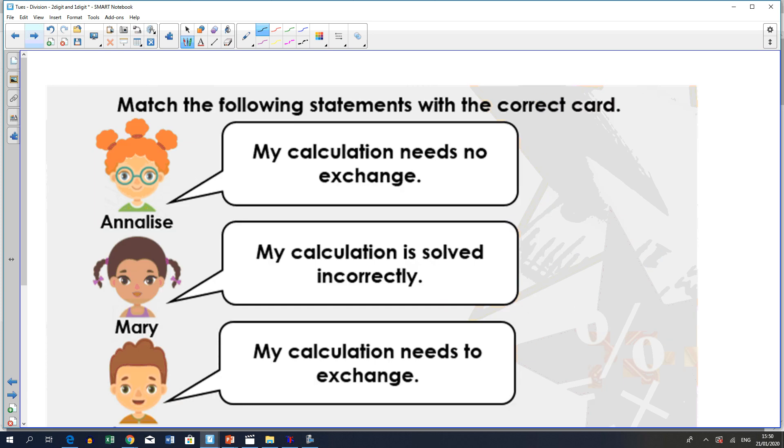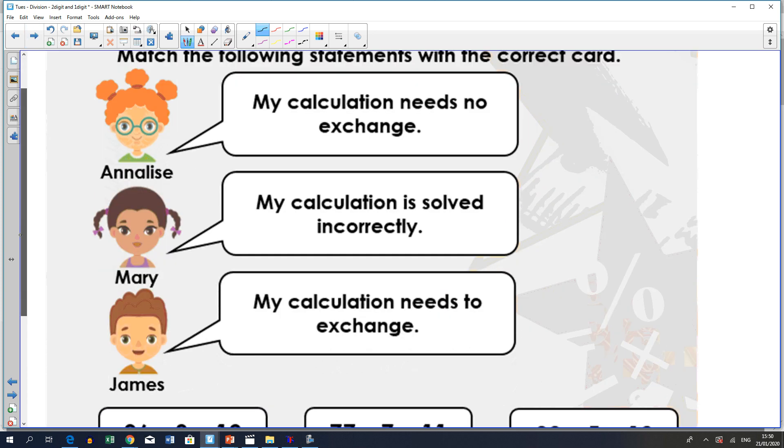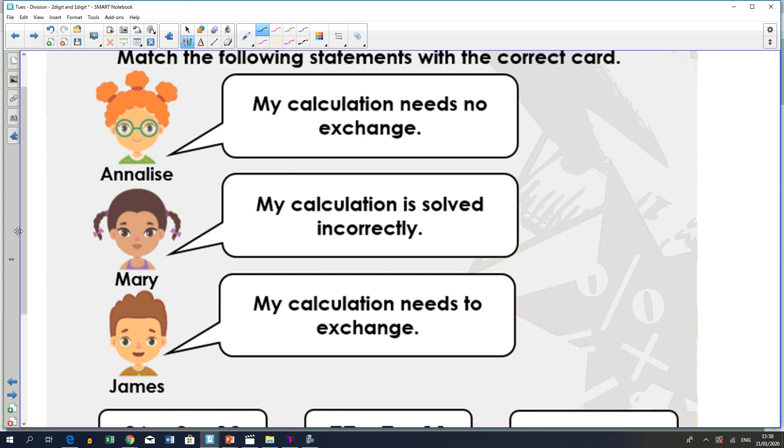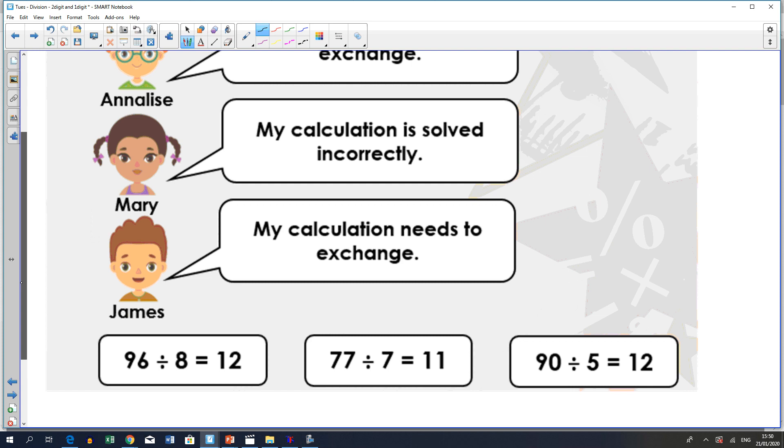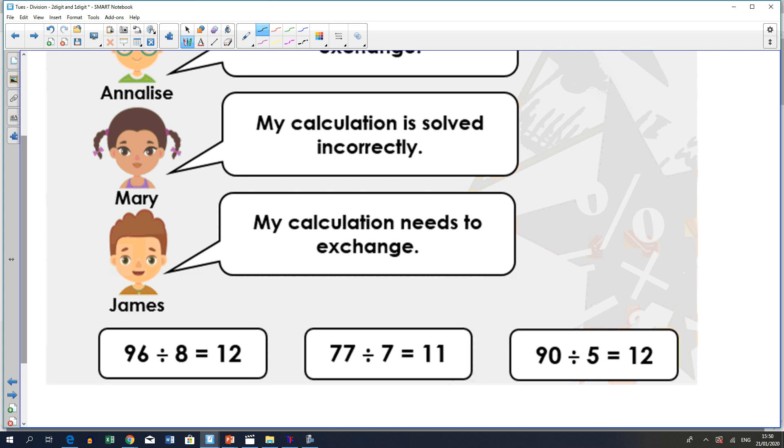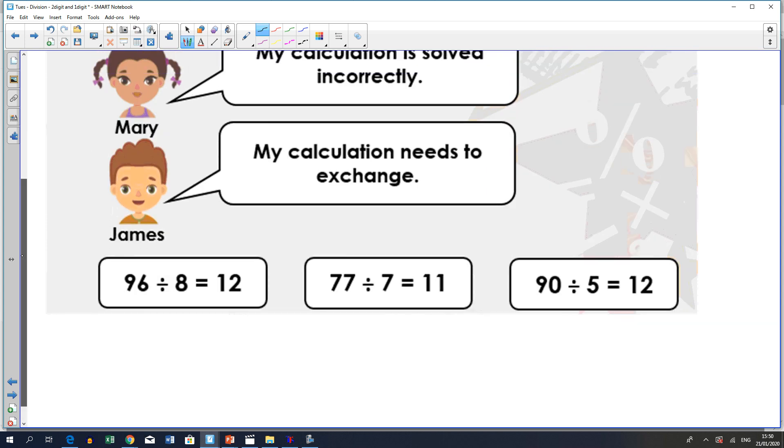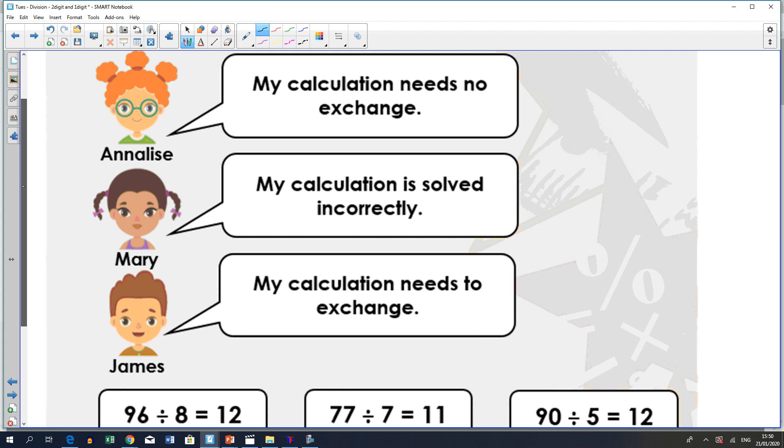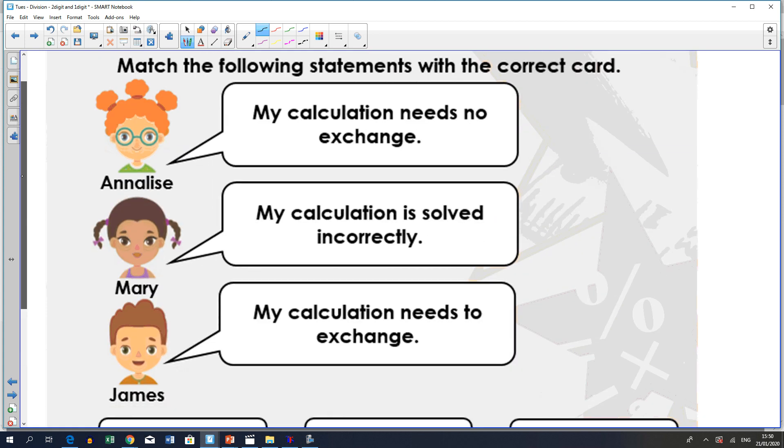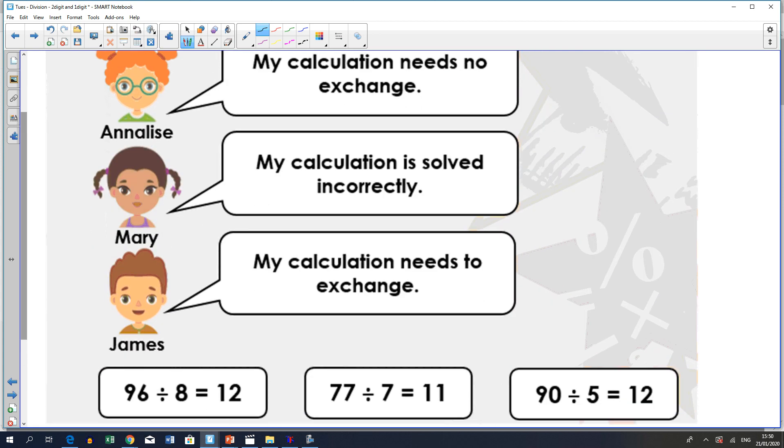Okay, so I hope that was okay. Next one, it says, match the following statements with the correct card. My calculation needs no exchange. My calculation is solved incorrectly by Mary and Jane says that my calculation needs to exchange. So, what you need to do is I would work out all of these and I would see which one needs to be exchanged and which one is incorrect and please match them up. We'll go through this in tomorrow's lesson.